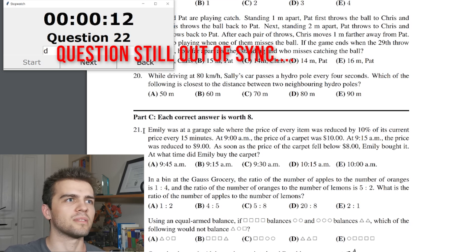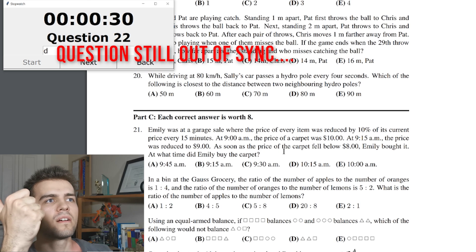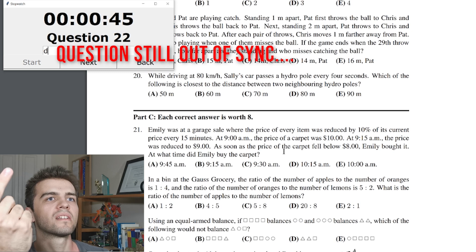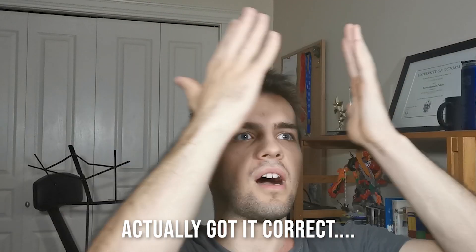Emily was, oh, these questions are impossible. Emily was at a garage sale where the price of every item was reduced by 10% of its current price every 15 minutes. Exponential decay. You can write that out at 9am, 10, $10. As soon as the price fell below $8, Emily bought it, at which time? So it goes to $10 and then it goes $9 and then it goes $9.15. $9.30. $8.10. 945. It's gotta be 945. Hey. What? Oh, I'm missing something here.